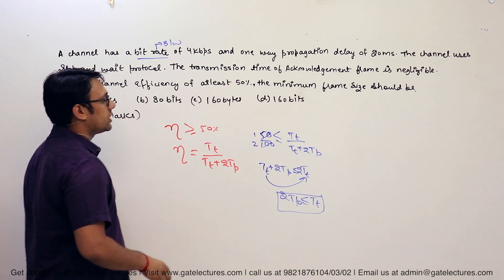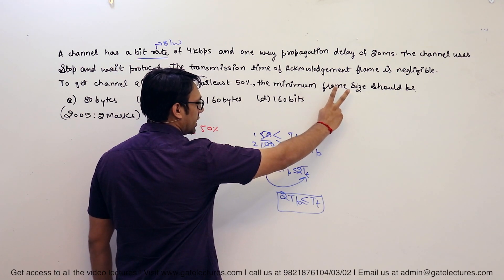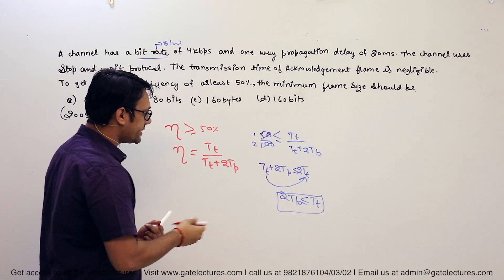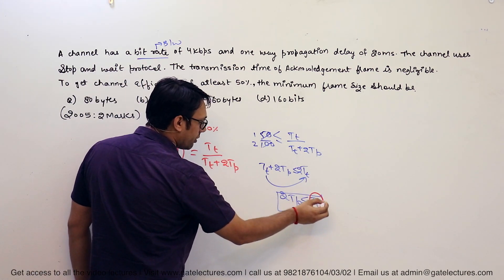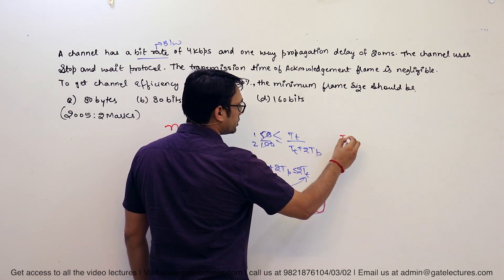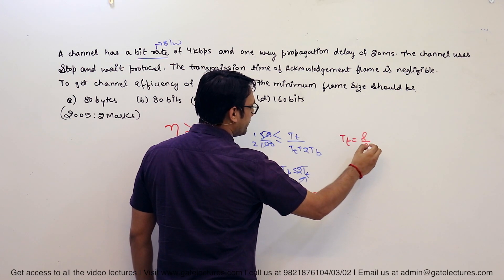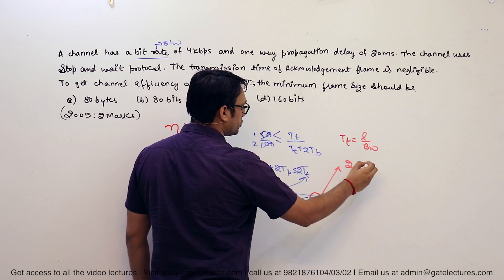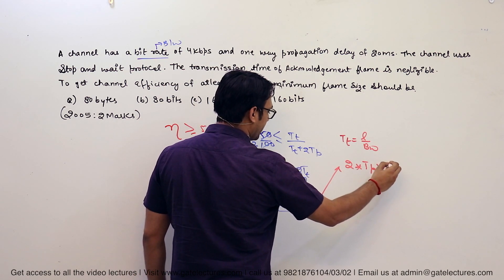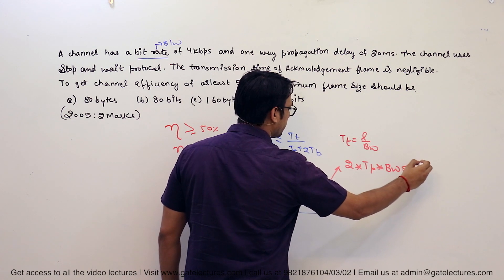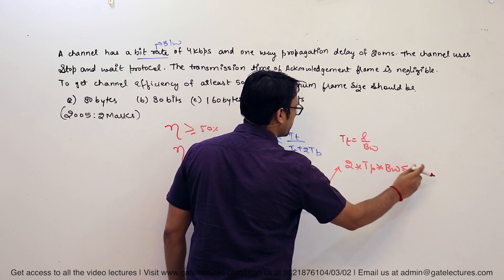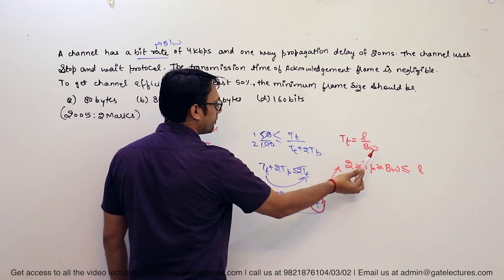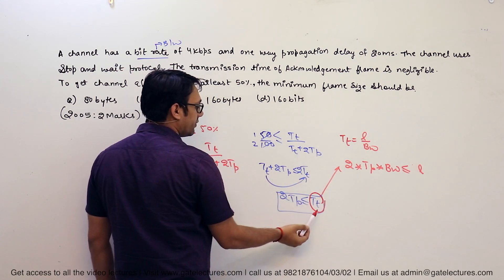They are asking for the minimum frame size, which means they are asking for the length of the packet. This length is used in the formula for TT. We know transmission time TT equals length (L) divided by bandwidth (B). Substituting, the formula becomes: 2·TP multiplied by bandwidth should be less than or equal to the length of the packet — because we replaced TT with L/B and cross-multiplied.